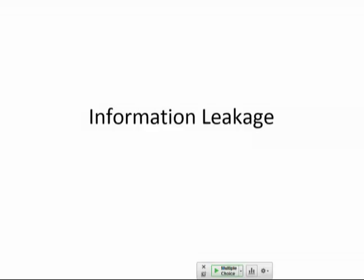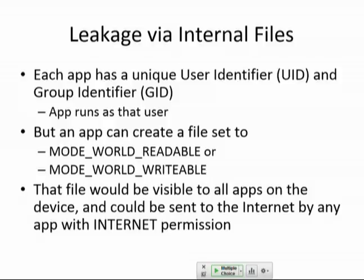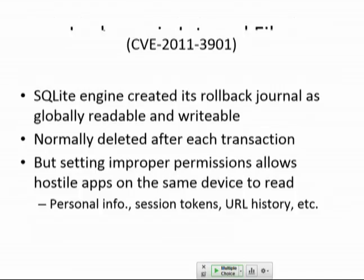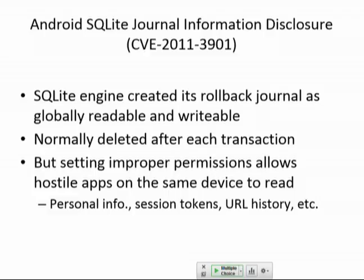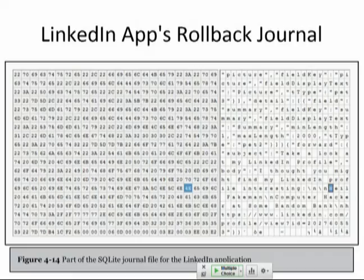Then there's information leakage. One kind is from internal files where you store a file somewhere with the wrong permissions so anyone can steal it — like on the SD card — or you make a file world-readable and world-writable. Just like any other Linux system, you can have 777 permissions. The Android SQLite journal had this issue: all versions of SQL have a journal that keeps track of what's going on, and they had improper permissions so the journal was publicly available.